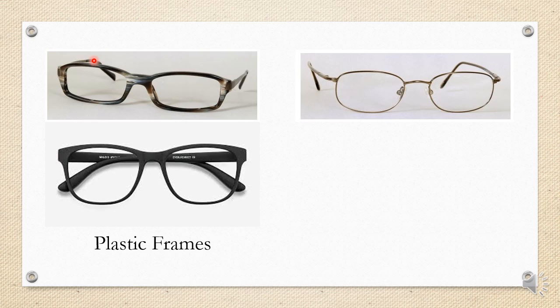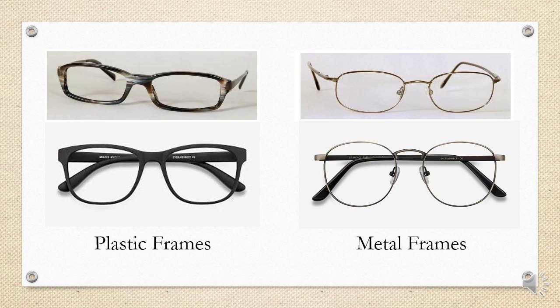The next type is the metal frame — a classic design where the complete frame is made of metal, except the nose pads which are generally made of plastic or silicone, and the end piece covers which are also plastic. The eye wire, bridge, and temple are all metal. Materials used include stainless steel, alloys, nickel, magnesium, titanium, and other hypoallergenic metals.